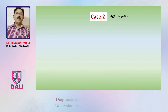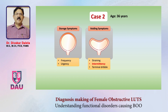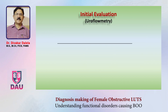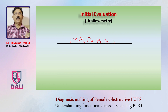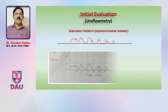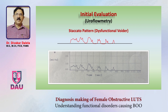Case two is a 36-year-old female with storage symptoms — frequency and urgency — and voiding symptoms where the main complaint is intermittency, along with a feeling of incomplete emptying. This looks similar to the previous case, but on uroflowmetry the graph shows interrupted flow — flow comes, stops, flow comes, and stops. This kind of graph is called a staccato pattern, and it is typical of dysfunctional voiders.